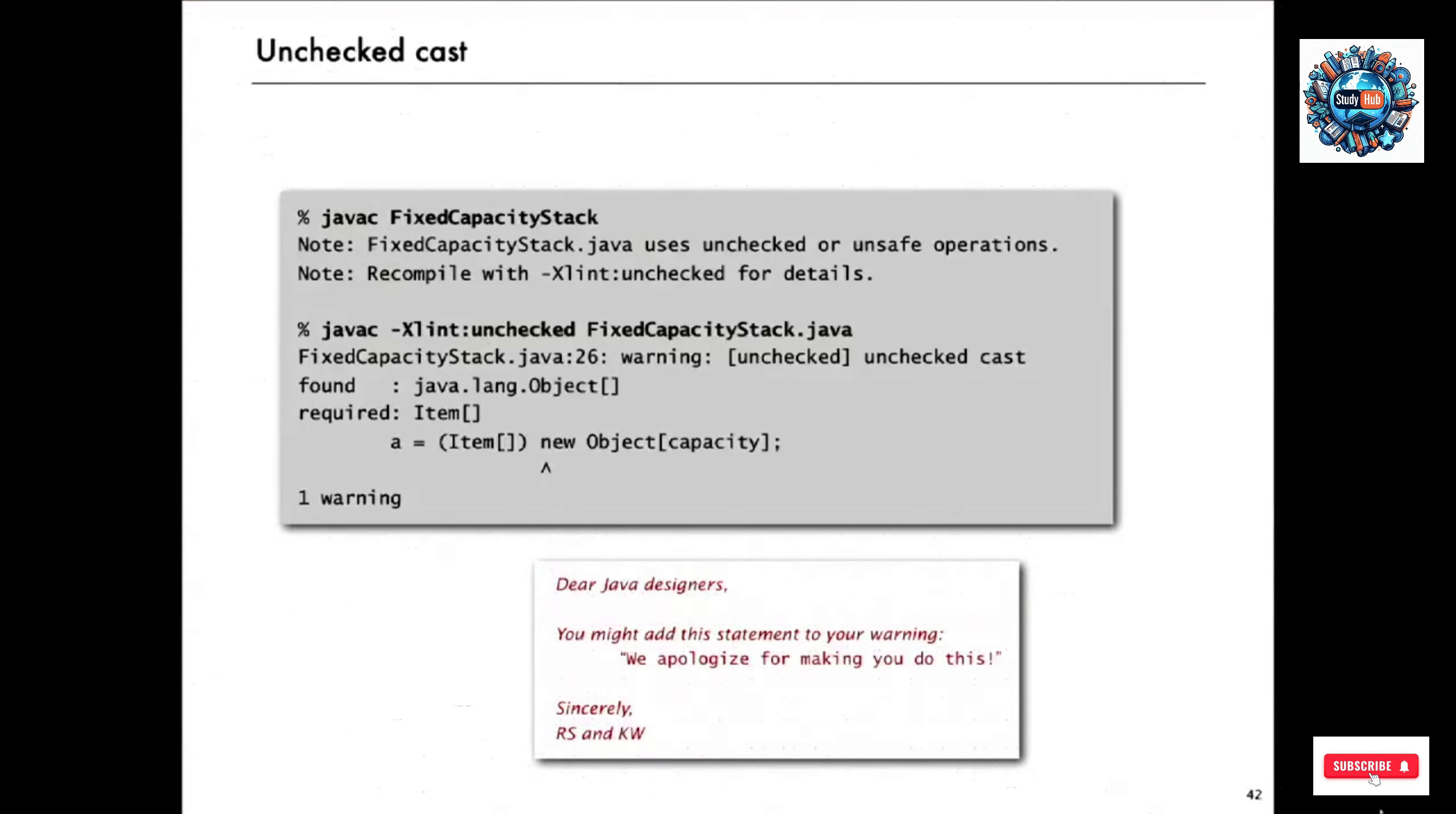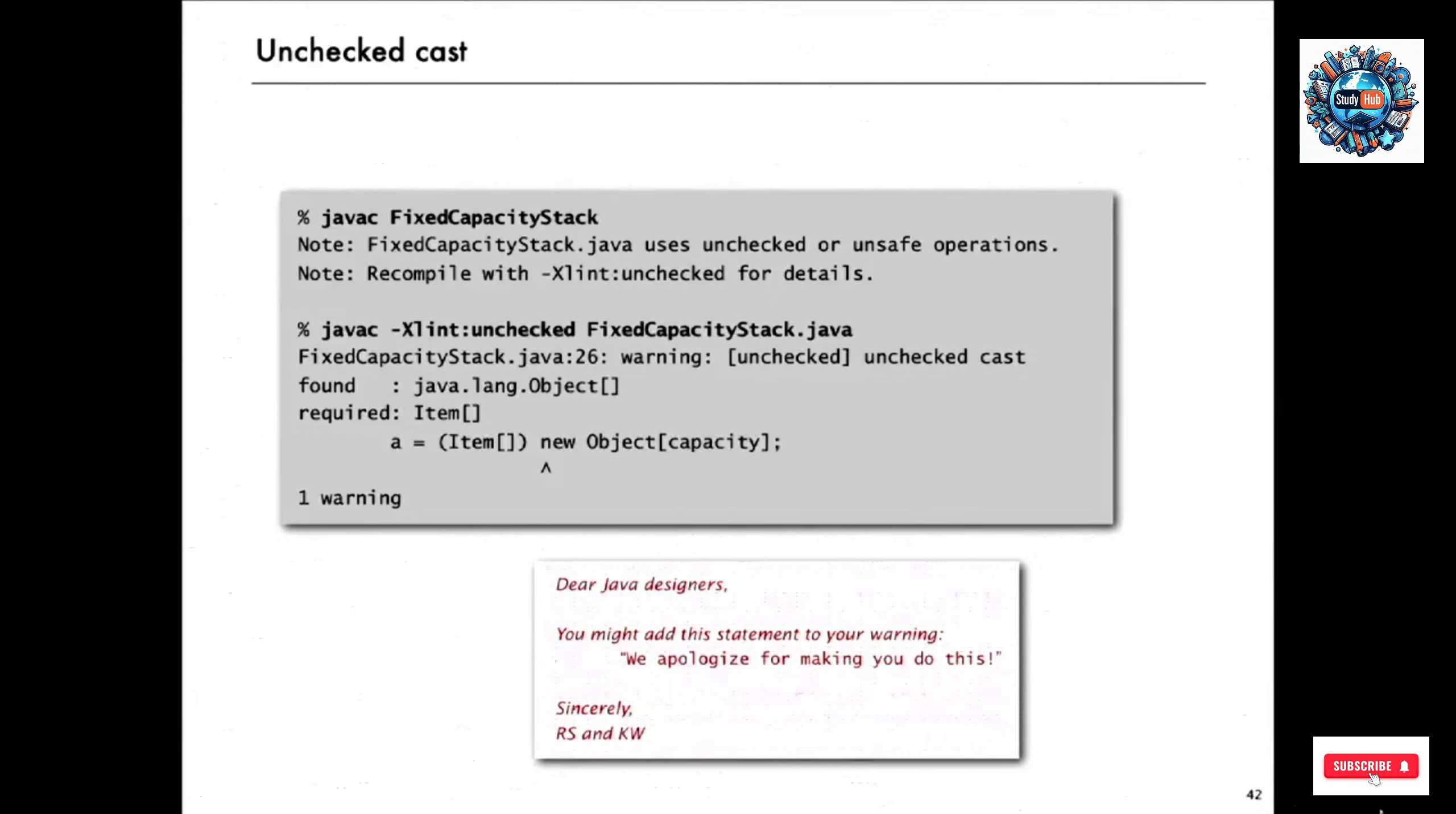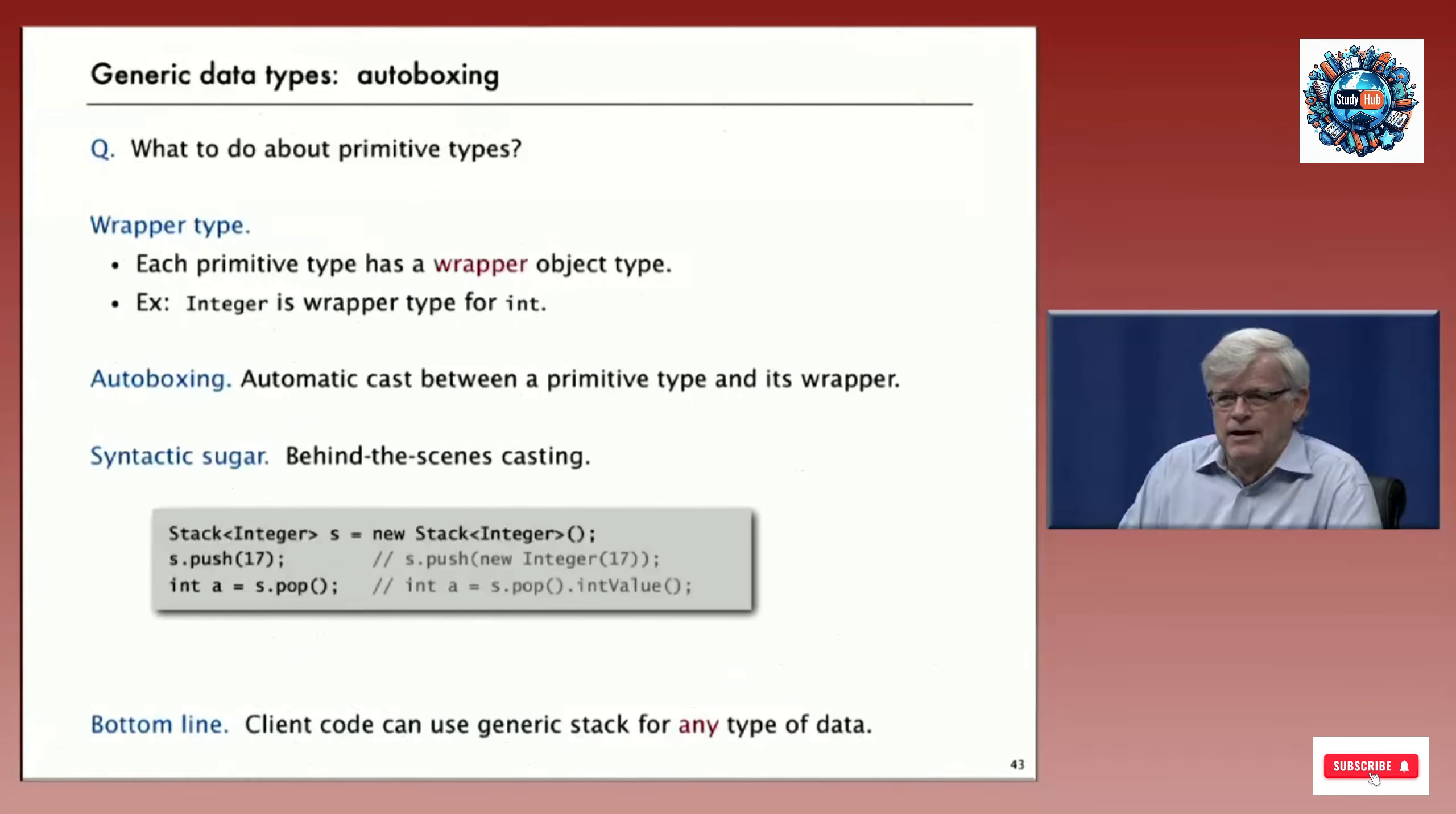I think maybe they might have added to this warning statement, you know, we apologize for making you do this. It's not our fault. We had to do that because of your requirement about not allowing us to declare generic arrays. So please don't think there's something wrong with your code if you follow our prescriptive and get this warning message.